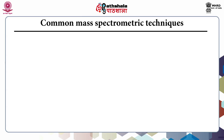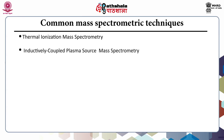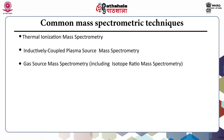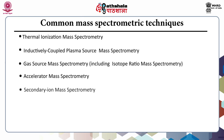Common mass spectrometry techniques include thermal ionization mass spectrometry, inductively coupled plasma source mass spectrometry, gas source mass spectrometry (which includes isotope ratio mass spectrometry), accelerator mass spectrometry, and secondary ion mass spectrometry.